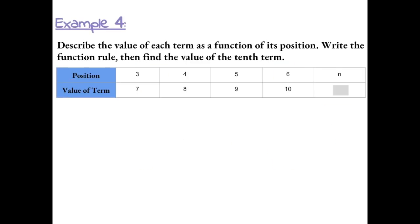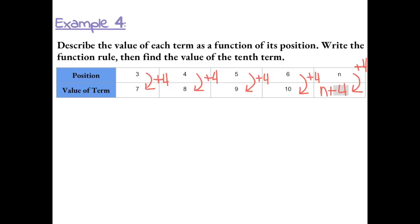Example 4: Describe the value of each term as a function of its position, write the function rule, then find the value of the 10th term. We want to notice a pattern between each position and the value of the term. From 3 to 7, we are adding 4. From 4 to 8, adding 4. From 5 to 9, plus 4. And from 6 to 10, plus 4. So using the variable n, we add 4 to n to get the value of the term, giving us the function rule n plus 4.